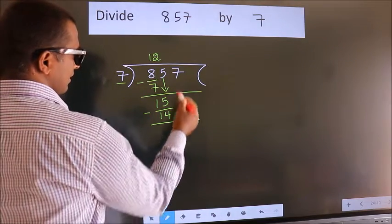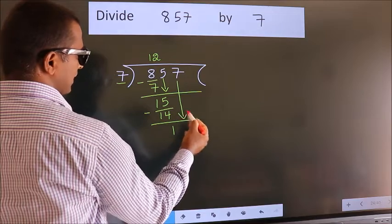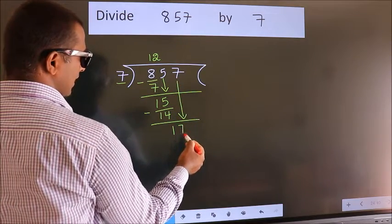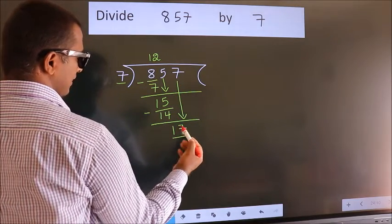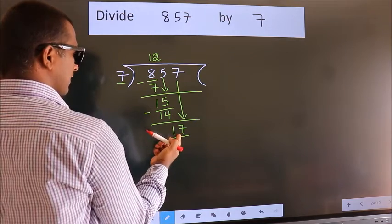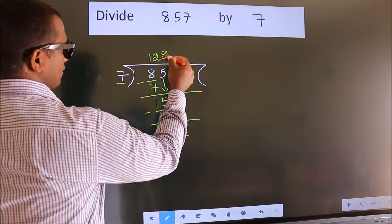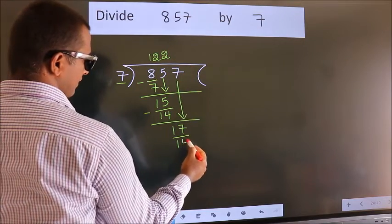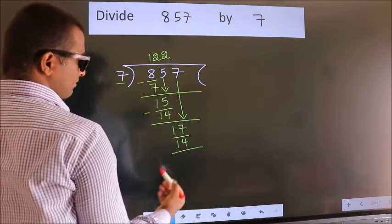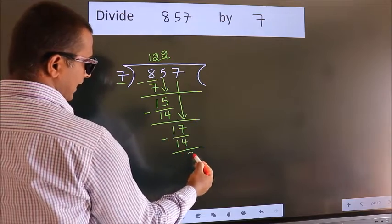After this, bring down the beside number. 7 down, so 17. A number close to 17 in the 7 table is 7 twos, 14. Now, we subtract. We get 3.